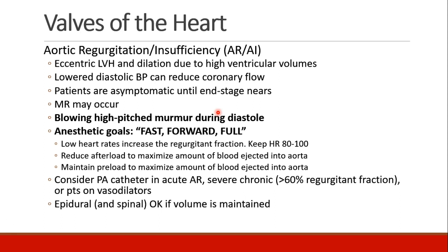On the other hand, we can have aortic regurgitation or aortic insufficiency, where the valve is incompetent and there's backflow through the valve during diastole. These patients develop an eccentric left ventricular hypertrophy and the ventricle dilates due to very high ventricular volumes, as blood fills both from the incompetent aortic valve as well as naturally through the mitral valve. Because blood flows back from the aorta, diastolic pressures tend to be low and coronary blood flow may be compromised. Many patients with aortic regurgitation are asymptomatic until very late in the disease. As the left ventricle becomes more and more dilated with volume, mitral regurgitation can also occur.